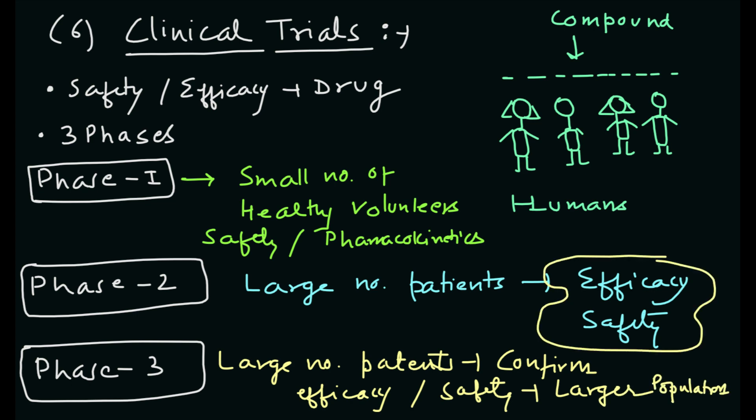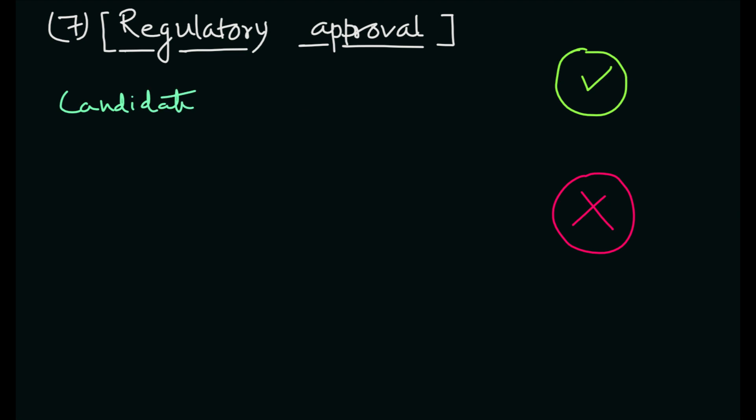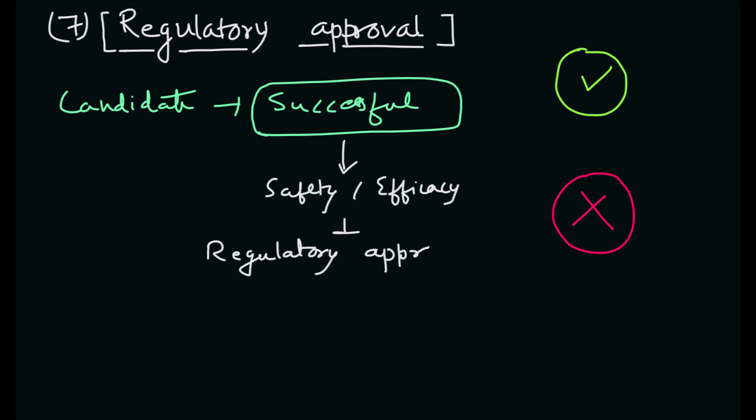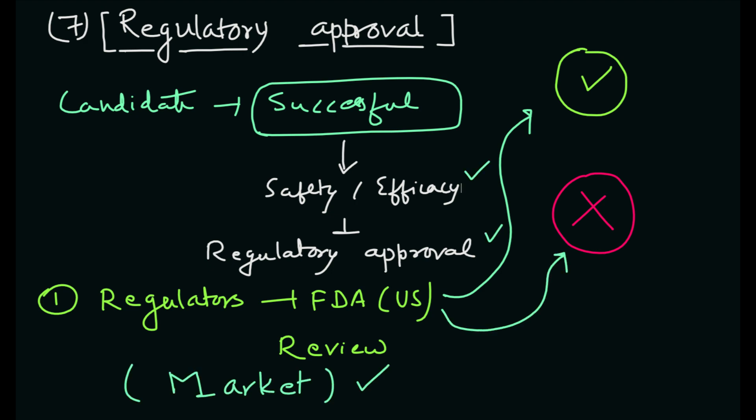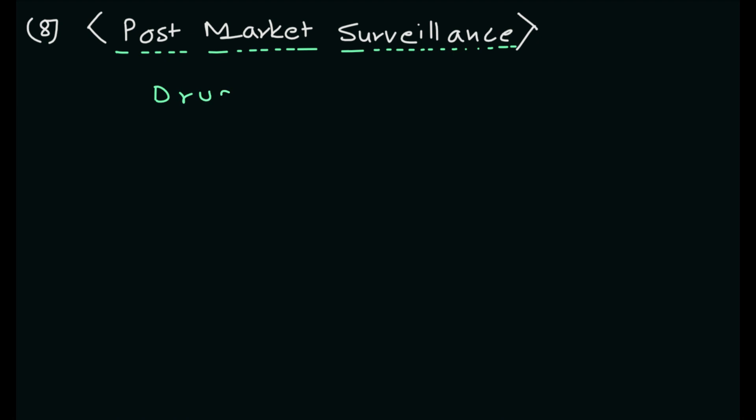Phase 3 trials confirm the drug's efficacy and safety in a larger population. The next stage is regulatory approval. If a drug candidate successfully completes clinical trials and demonstrates safety and efficacy, it can be submitted for regulatory approval. Regulatory agencies such as the FDA in the United States review the data and decide whether to approve the drug for use in the market.